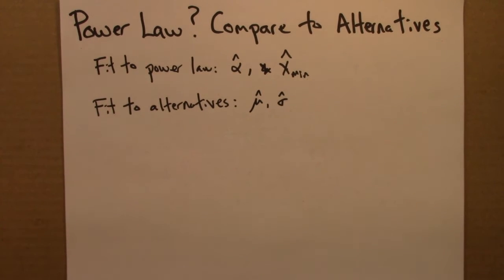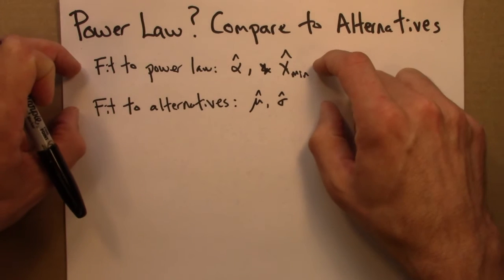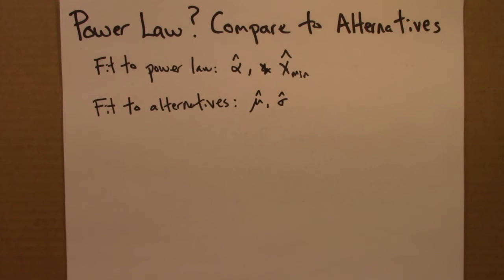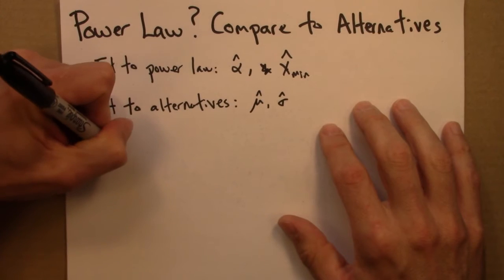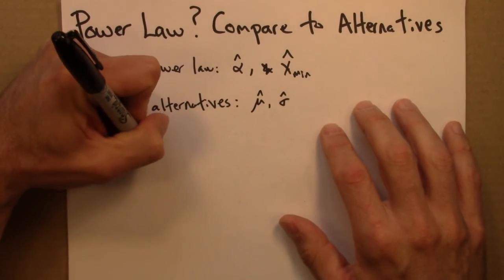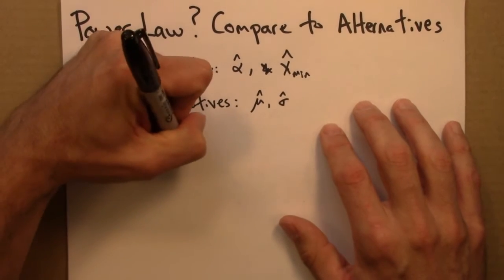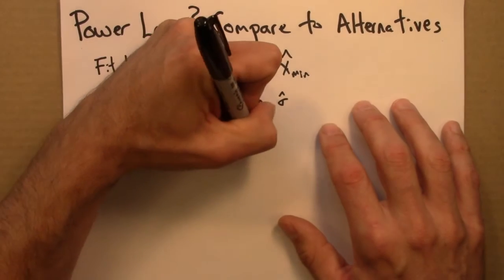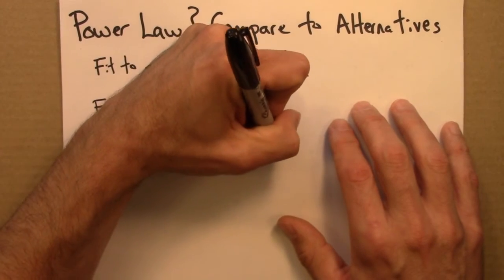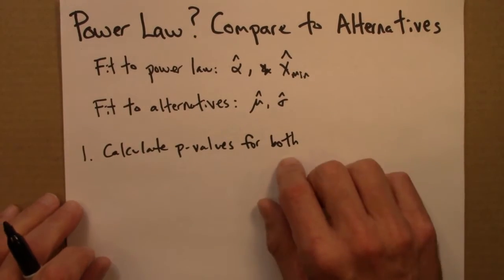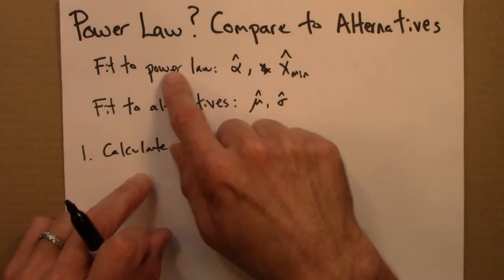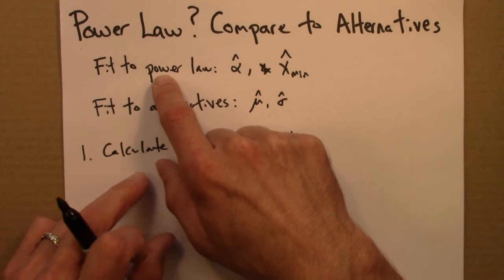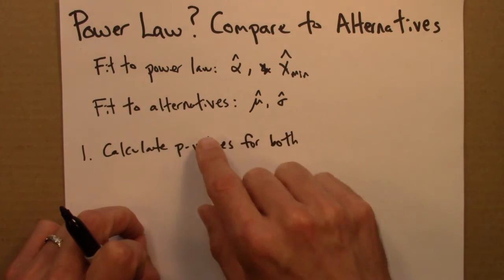So now you've got these two possible fits, and you want to know which one is better. So there are two possible approaches. One is to calculate p-values for both. Remember that p-values, in this context, in this setting, a larger p-value indicates more evidence for our power law.